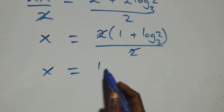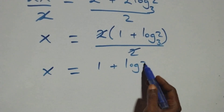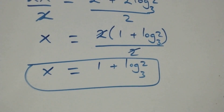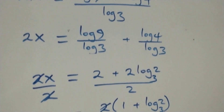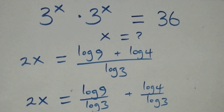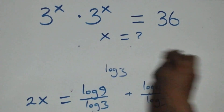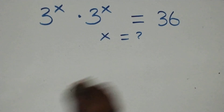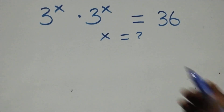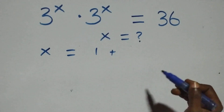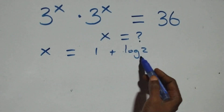We have x equals 1 plus log 2 base 3. That is the value of x here — we have 1 plus log 2 base 3. Then let's check here if this satisfies the given problem by substituting the value of x, which is x equals 1 plus log 2 base 3.